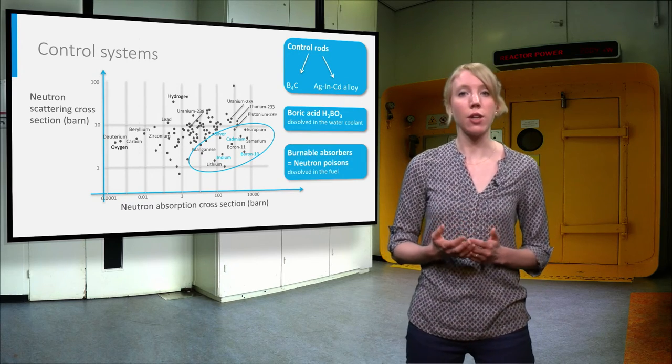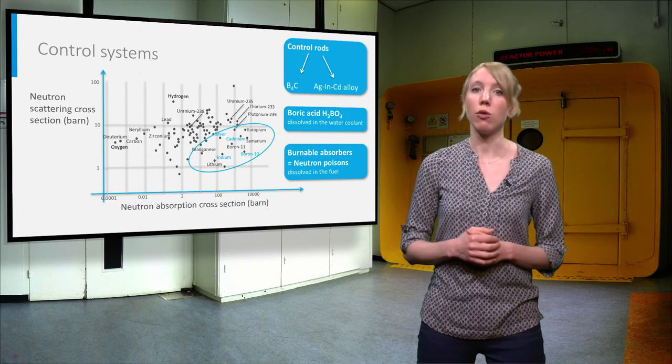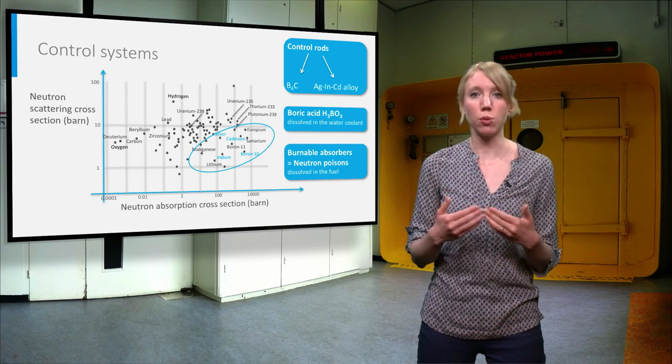The third method is to add a burnable absorber dissolved into the fuel. These materials are called neutron poisons.